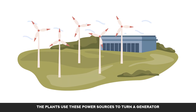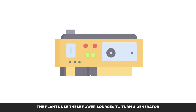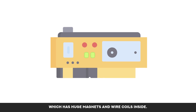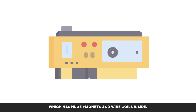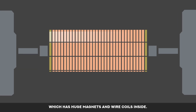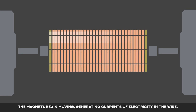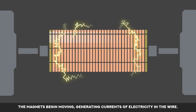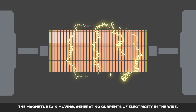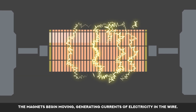The plants use these power sources to turn a generator, which has huge magnets and wire coils inside. The magnets begin moving, generating currents of electricity in the wire.